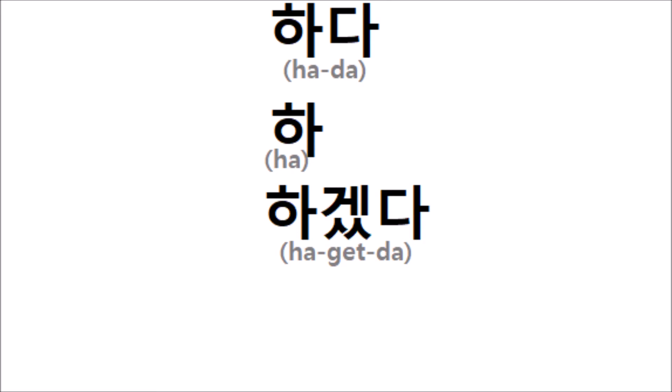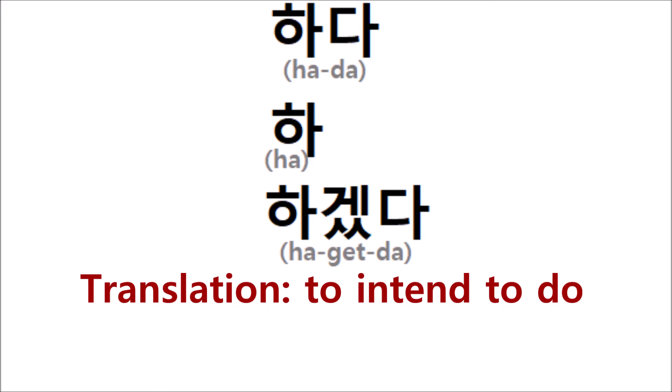Ha-getta is the infinitive version of the presumptive future, meaning 'to intend to do.' But we don't usually talk in the infinitive form. We want to say 'I intend to do,' not 'I to intend to do.' So we have to conjugate this verb now.